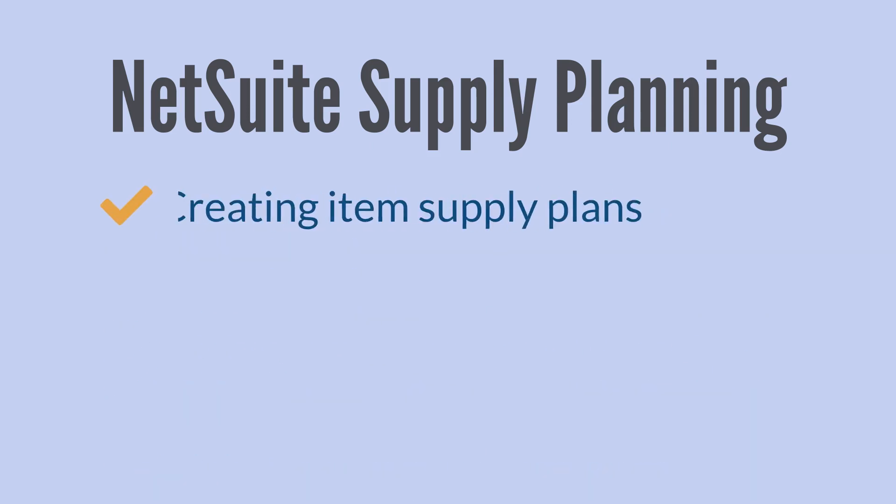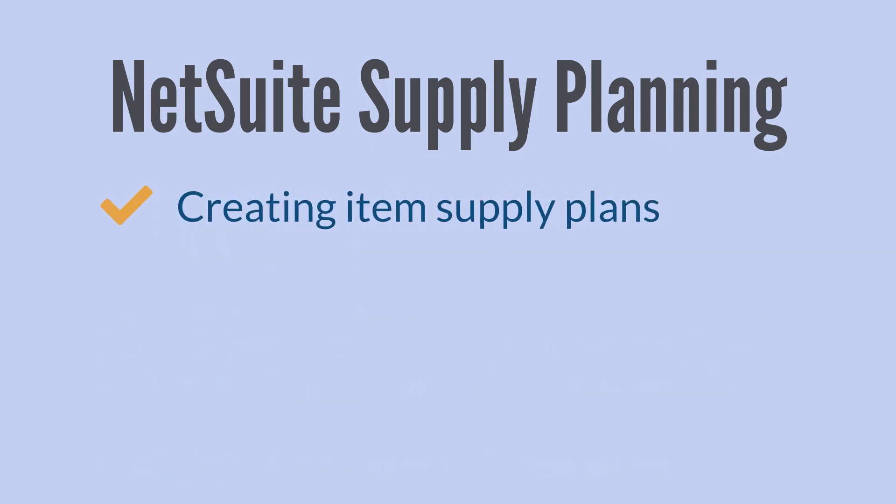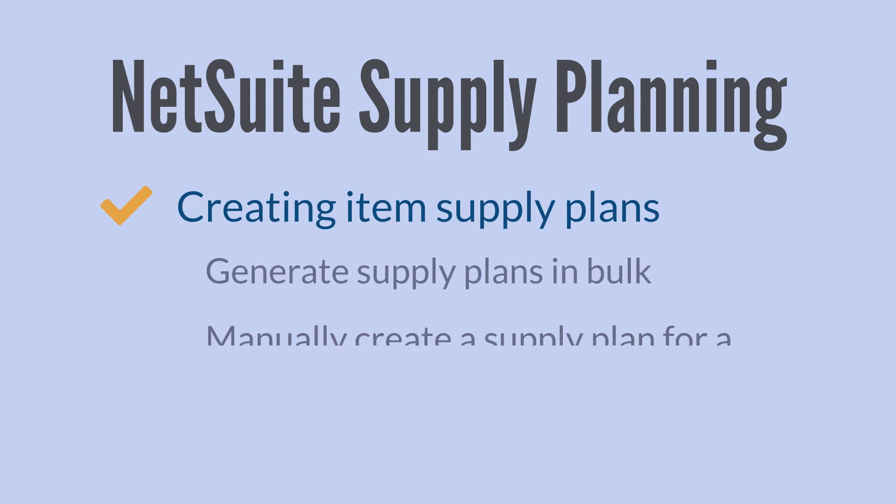There are a couple different ways you could create item supply plans. First, you could generate supply plans in bulk for items in a specific location. Otherwise, you can manually create a supply plan for a single item.